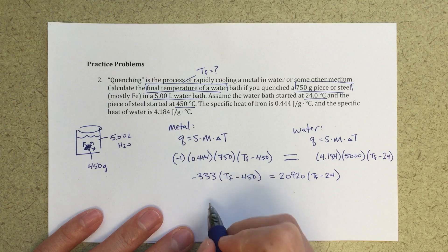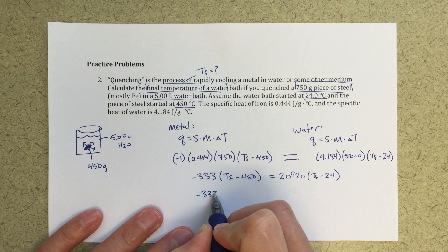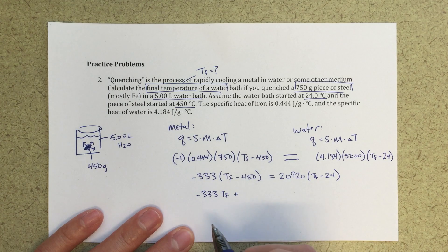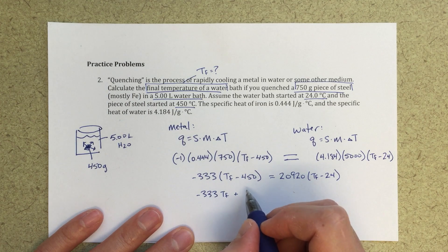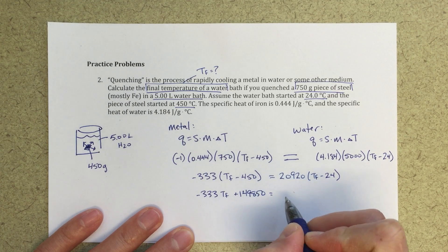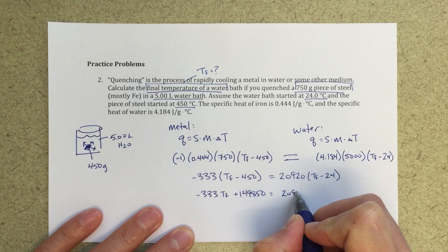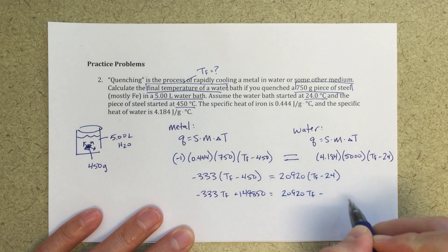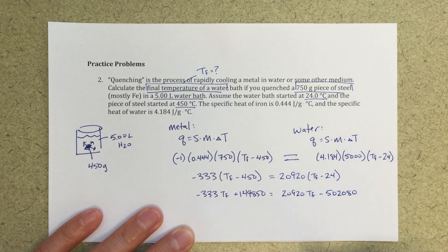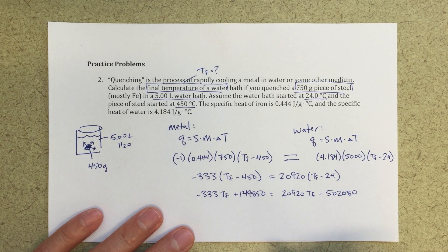Now just distributing this a little bit more, minus 333 t final plus—so I've got a minus times a minus—is going to be a plus 149850 equals 20920 t final minus, in this case, 502080, so a lot of math here, a lot of algebra.